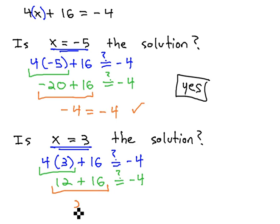As you can see, when we add those, we get 28, which is not equal to negative 4. We did not get a true equation when we used 3 for the value of x. This means 3 is not the solution to this equation.